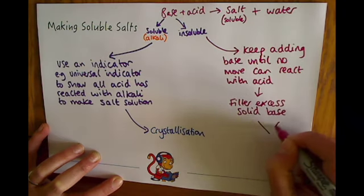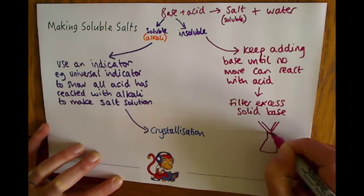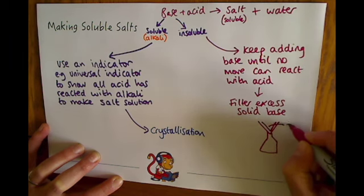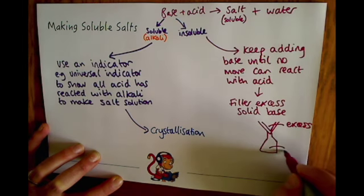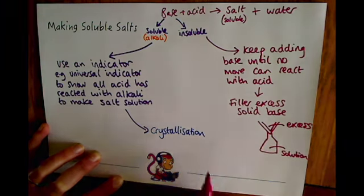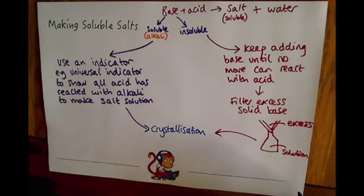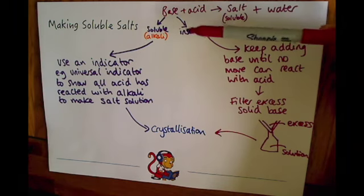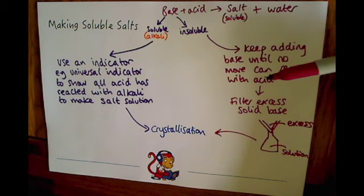You filter using a funnel and filter paper inside a conical flask. In the filter paper you'd end up with the excess base, and in the flask you'd end up with the solution containing the soluble salt and water, which you can then go on to heat in an evaporating basin. You need to think carefully about whether the question is telling you about the solubility of the base or the solubility of the salt.